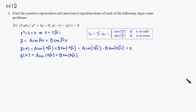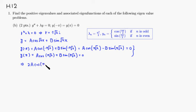Now we can solve for A and B. Adding the two equations together, you get 2A cosine of pi times square root of lambda, and the sine terms cancel out — negative B sine of pi times square root of lambda plus the positive version cancel. So this equals zero.